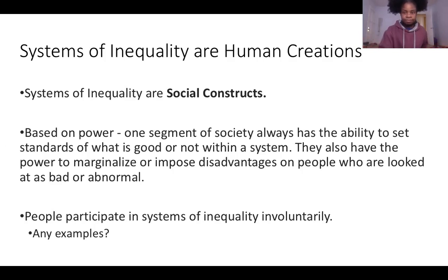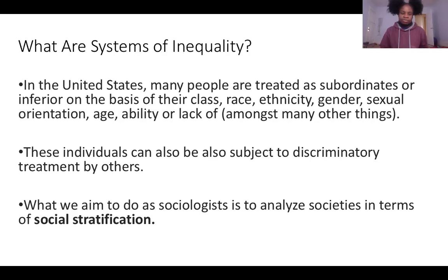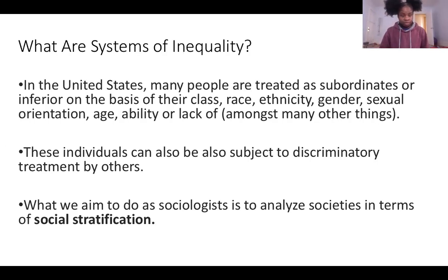What are systems of inequality? In the United States, many people are treated as subordinate or inferior on the basis of their class, race, ethnicity, gender, sexual orientation, age, ability, or lack thereof, among many other things. These individuals can also be subject to discriminatory treatment by others. What sociologists aim to do is analyze society in terms of social stratification — to look at society in terms of these layers.